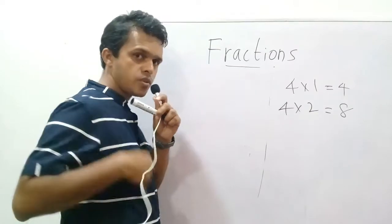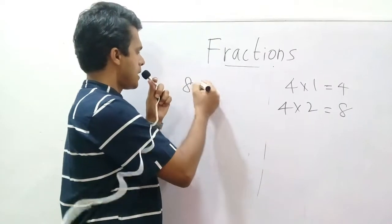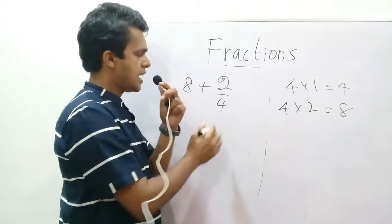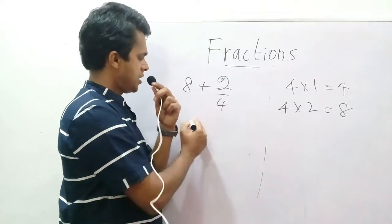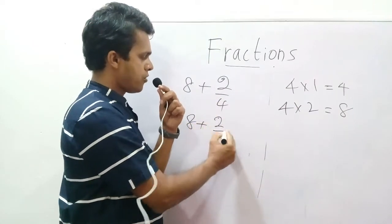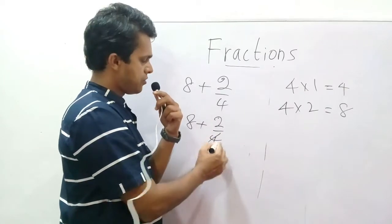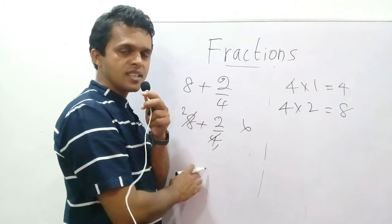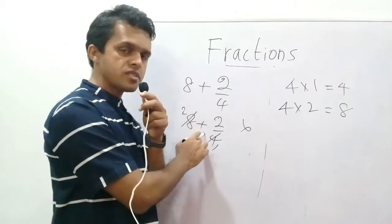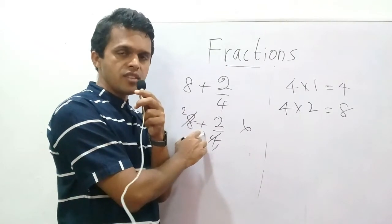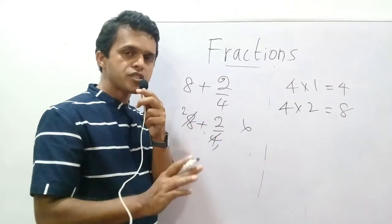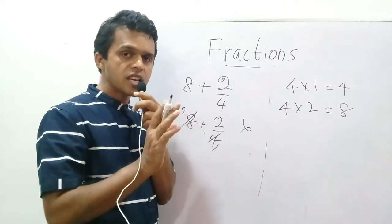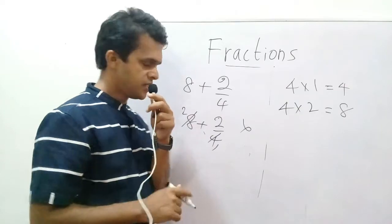You think you are given 8 plus 2 over 4. Can you simplify that? 1 time and 2 times? Cannot — that's wrong. The reason: here there is addition. You can see addition. Therefore you cannot use the previous method in order to simplify.